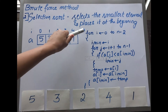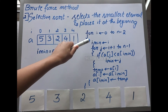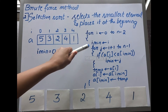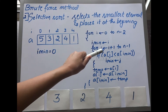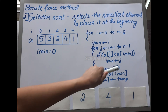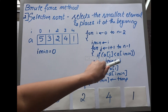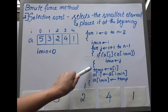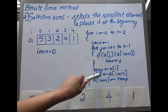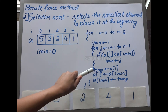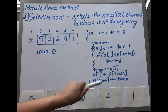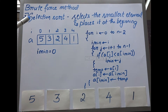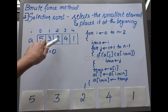The pseudocode looks like this: for i equals 0 to n minus 2, i_min is i. For j equals i plus 1 to n minus 1, if A[j] is less than A[i_min], then i_min takes the value of j. Then swapping happens: temp equals A[i], A[i] equals A[i_min], A[i_min] equals temp.